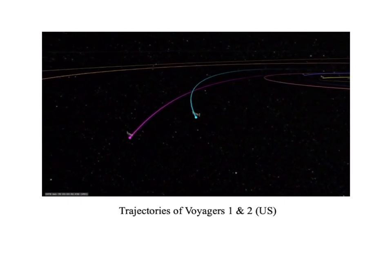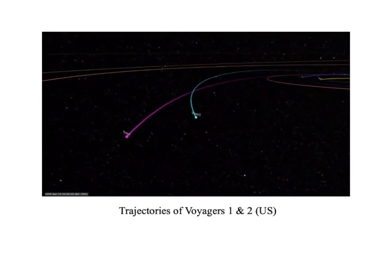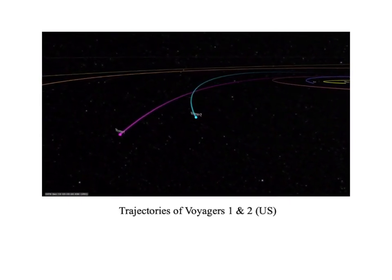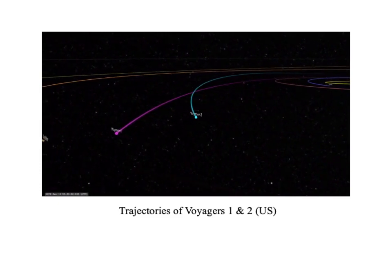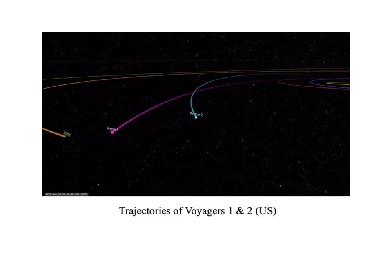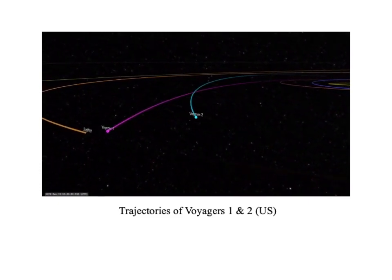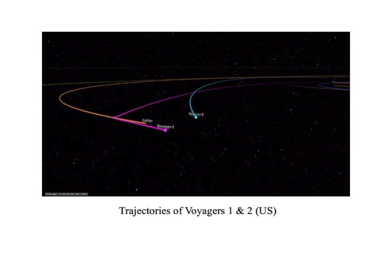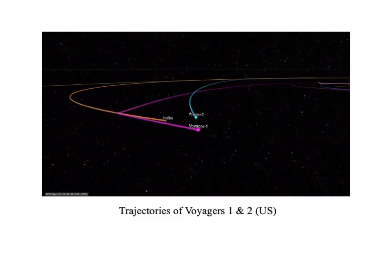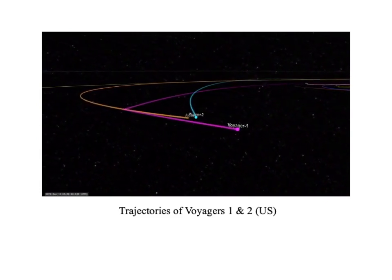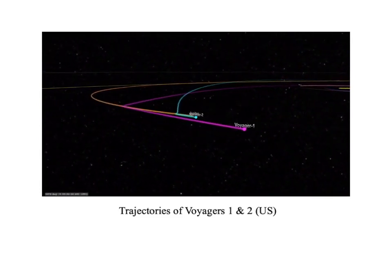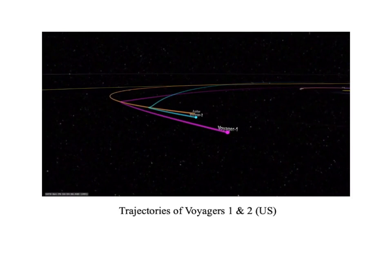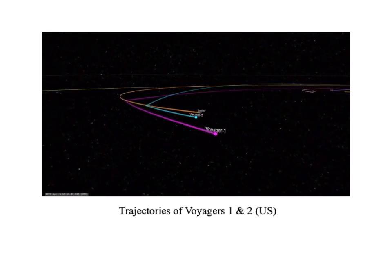Now we're getting close to Jupiter. First Voyager 1 passes by the planet, and then not too long afterwards, Voyager 2 passes by the planet, and both spacecraft continue on toward the planet Saturn.